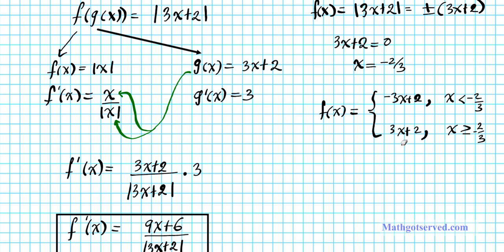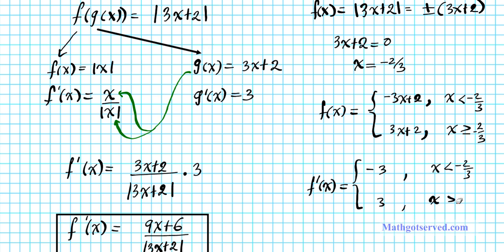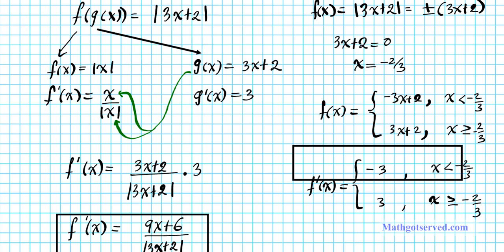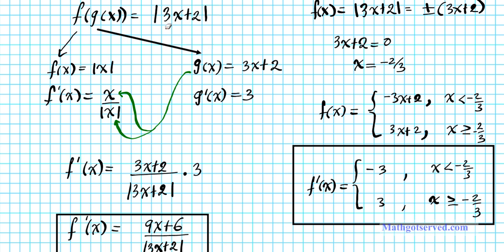Now we find the derivative of this piecewise defined function. f prime of x equals negative 3 when x is less than negative 2 thirds, and 3 when x is greater than or equal to negative 2 thirds. This is another valid solution for the derivative of the absolute value of 3x plus 2. Either of these solutions will receive full credit if you're asked to find the derivative of this absolute value function.